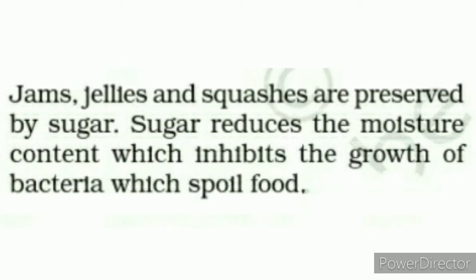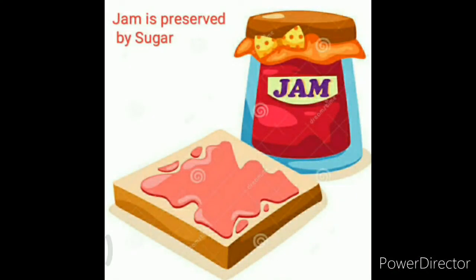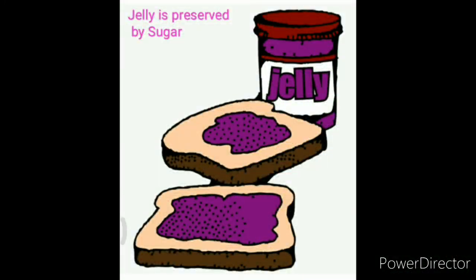Jam, jellies or squashes جیسی چیزوں کو لمبے عرصے تک محفوظ رکھنے کے لیے چینی کا استعمال کیا جاتا ہے۔ چینی ان میں سے نمی کو کم کر دیتی ہے جس کی وجہ سے bacteria کی growth نہیں ہو پاتی۔ جیسا کہ آپ picture میں دیکھ سکتے ہیں، اس میں jam اور jelly دکھائے گئے ہیں جنہیں محفوظ رکھنے کے لیے sugar کا استعمال کیا جاتا ہے۔